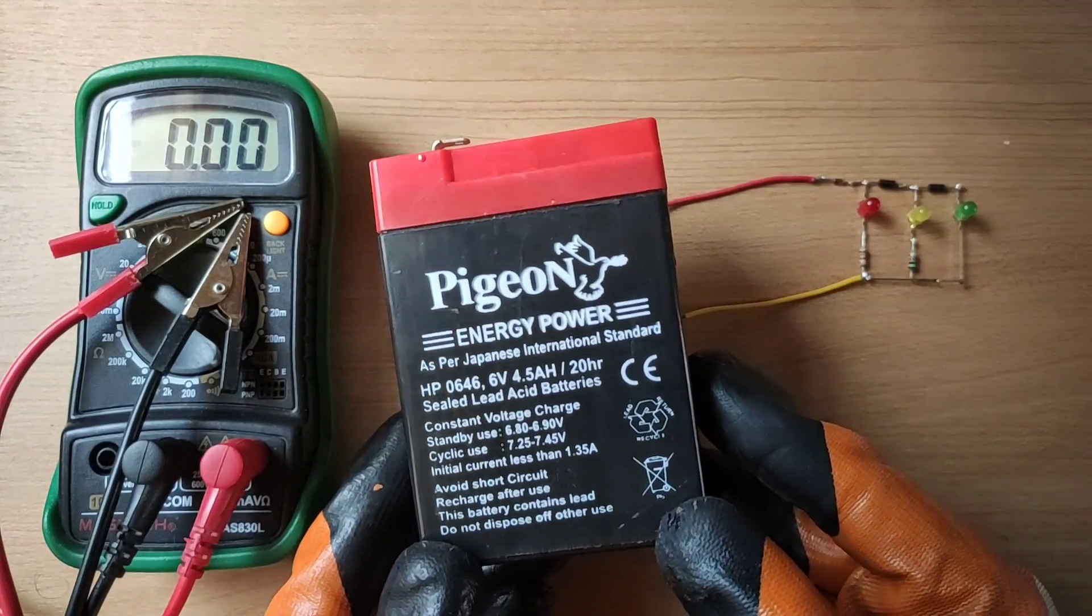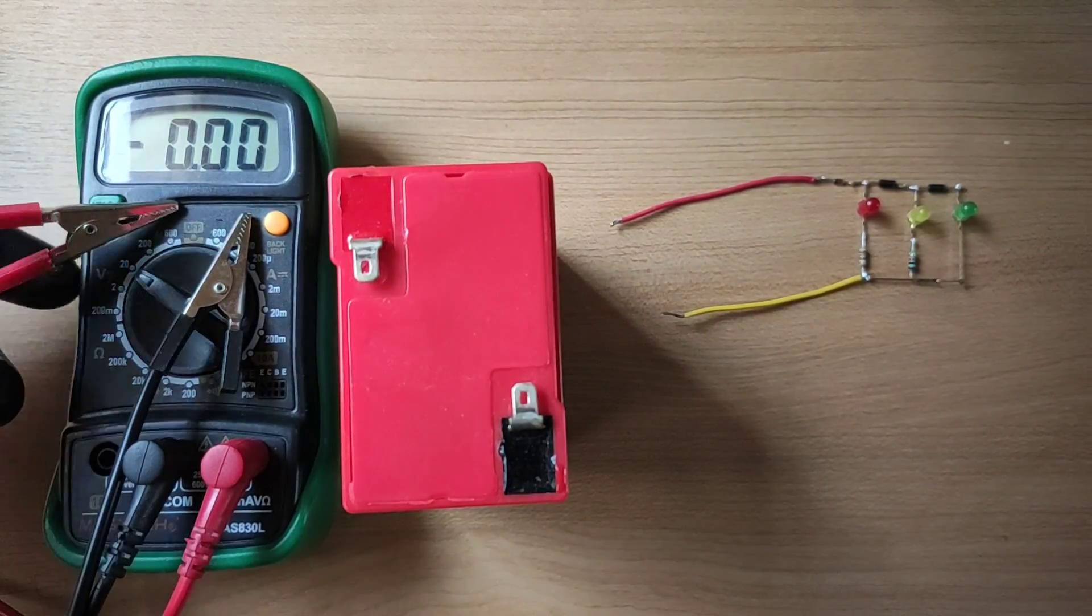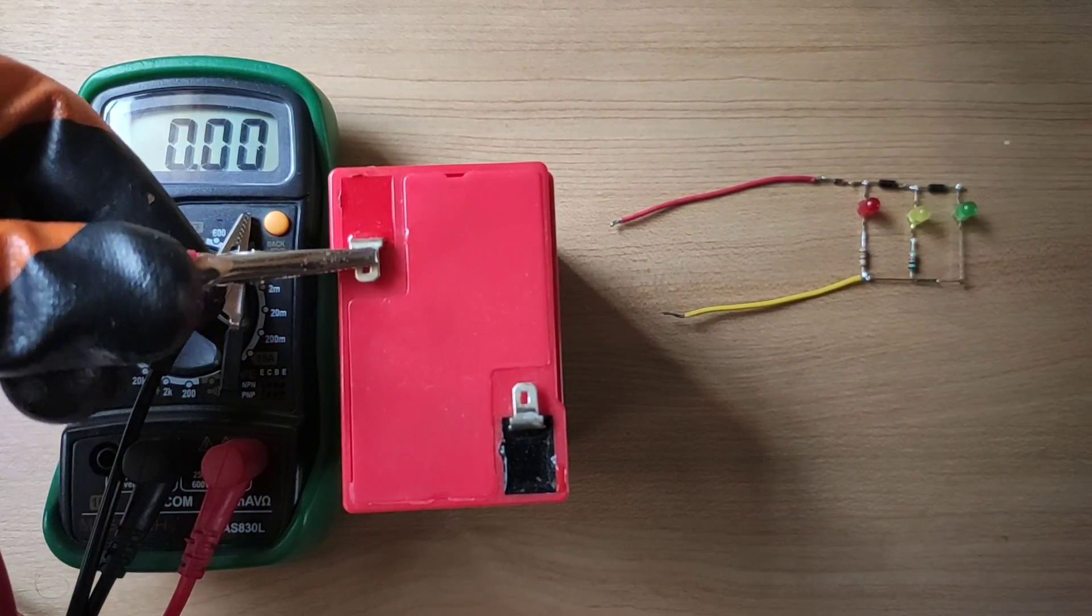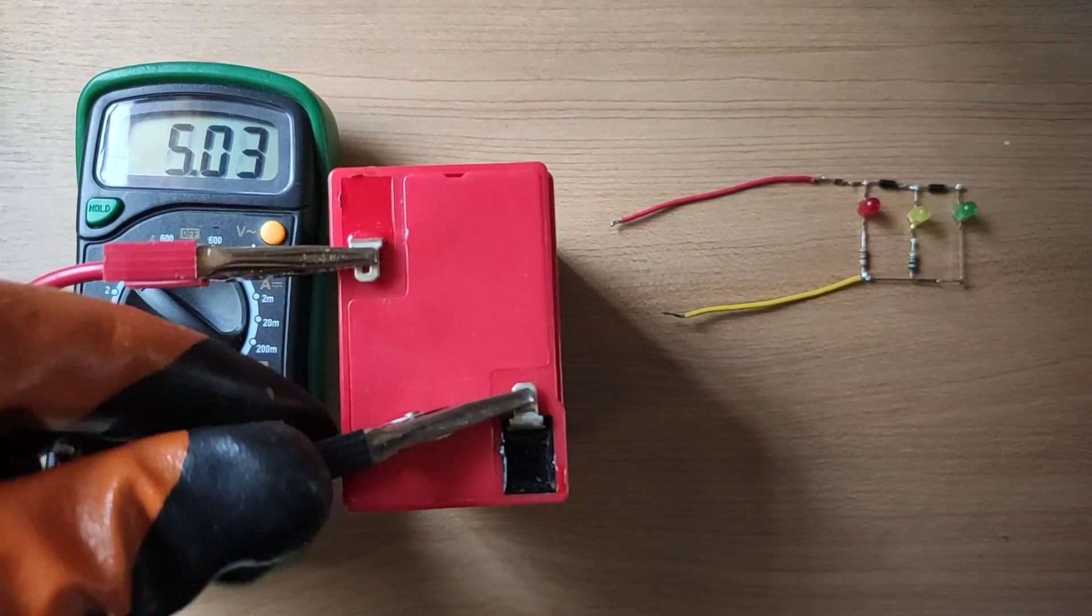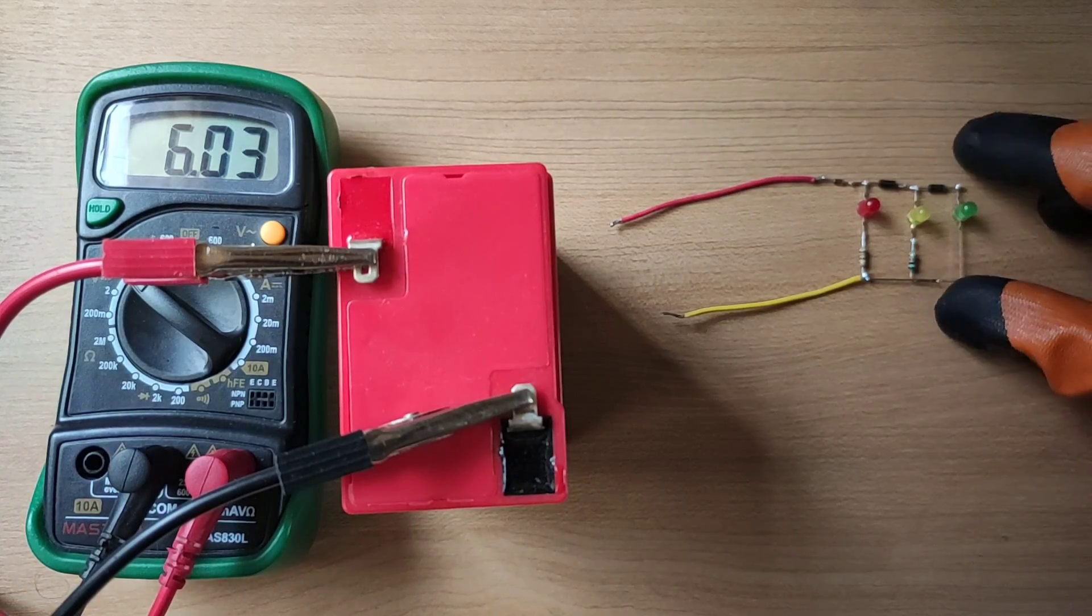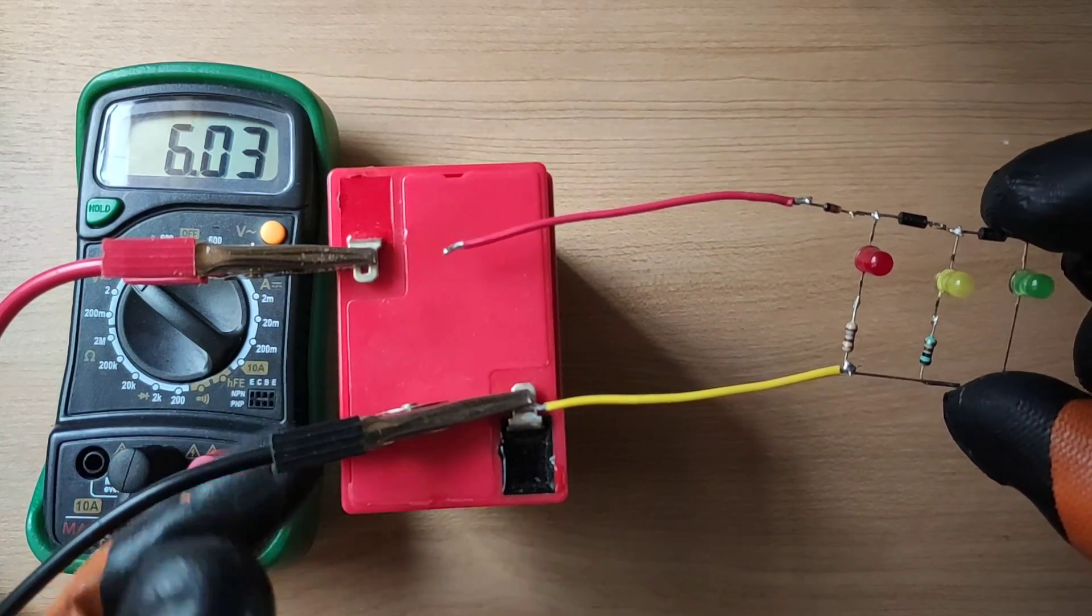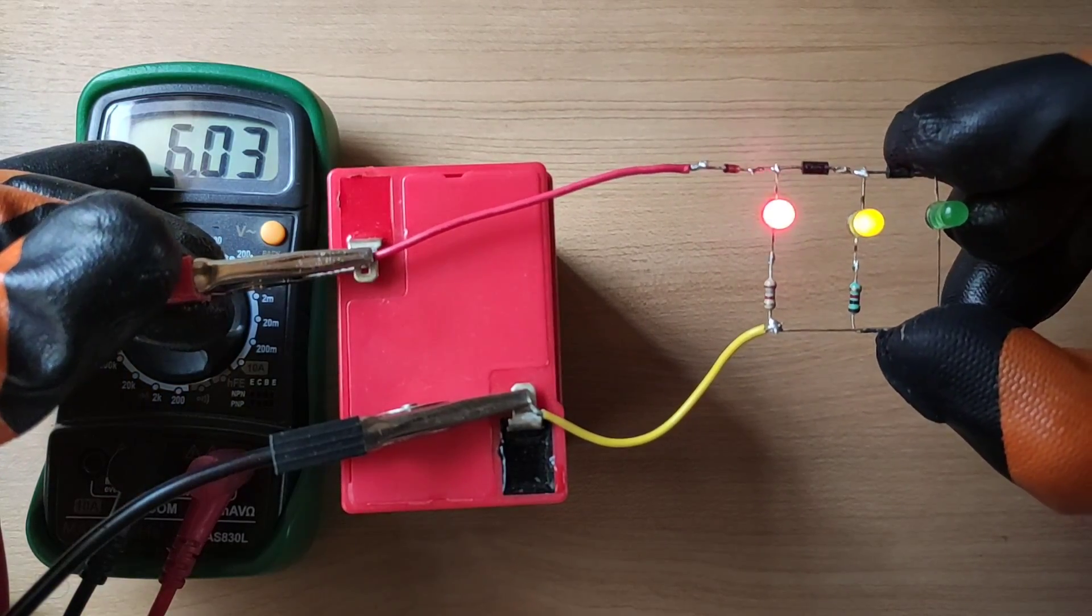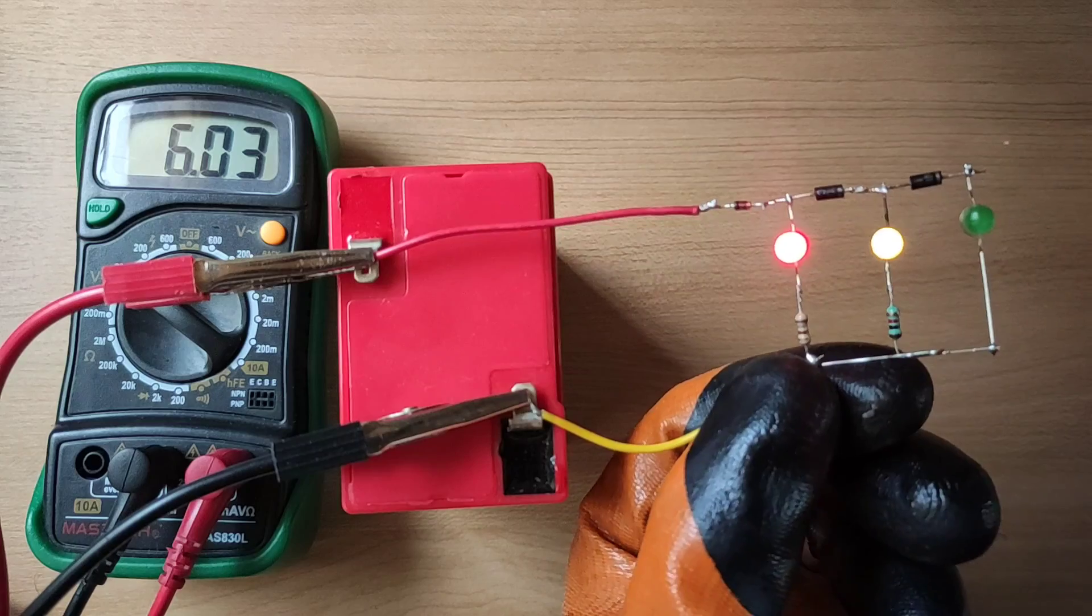Now here we have another 6-volt battery to test. As you can see, output is 6 volts and 50% charge is left. Now I connect circuit with battery. You can see only 2 LEDs are glowing.